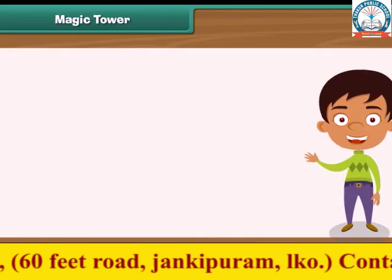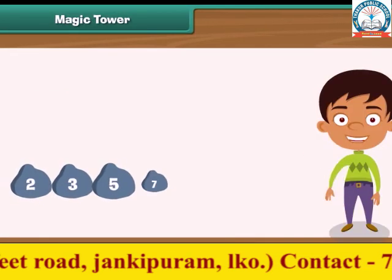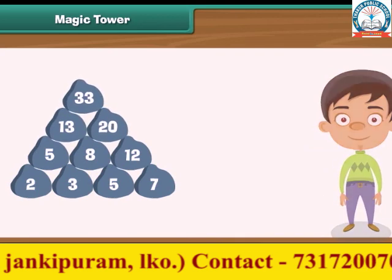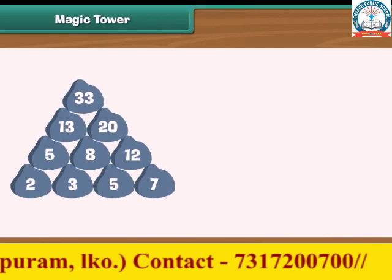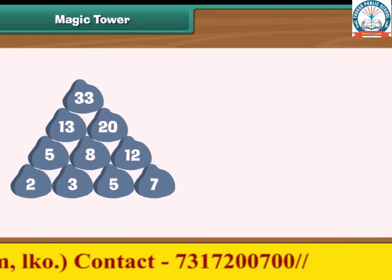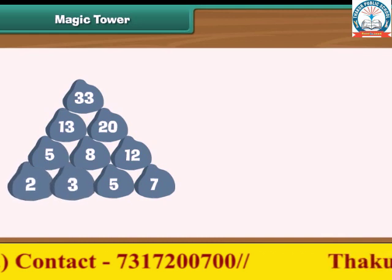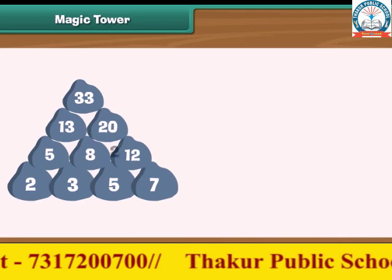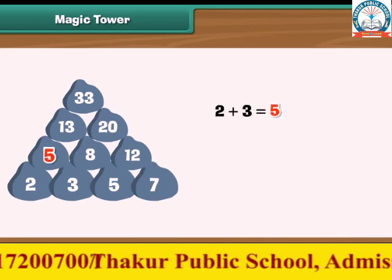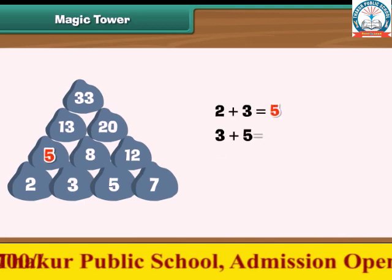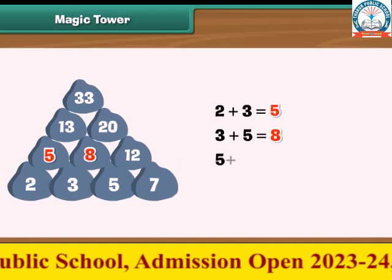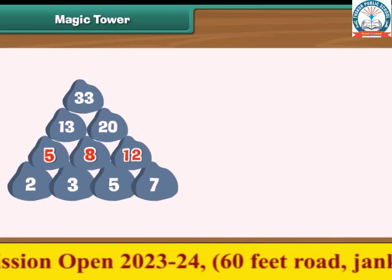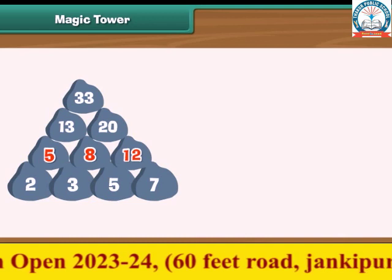Magic tower. Look at these number stones arranged as a tower — there is a pattern in them. Let us decipher it. Taking the stones in the bottom-most row: 2 plus 3 is equal to 5; 3 plus 5 is equal to 8; 5 plus 7 is equal to 12. So 5, 8, and 12 form the row above.